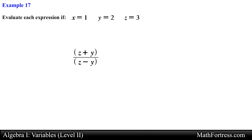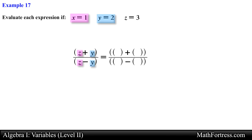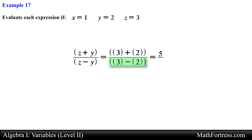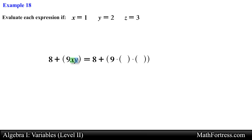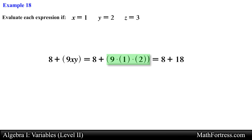Let's try the next expression: simplify the quantity (z plus y) over (z minus y). Substituting, we have (3 plus 2) over (3 minus 2), which is 5 over 1, reducing to 5. For the final expression, simplify 8 plus the quantity (9 times x times y). Substituting x equals 1 and y equals 2, we evaluate the parentheses first: that expression simplifies to 18, and adding 8 gives a final answer of 26.